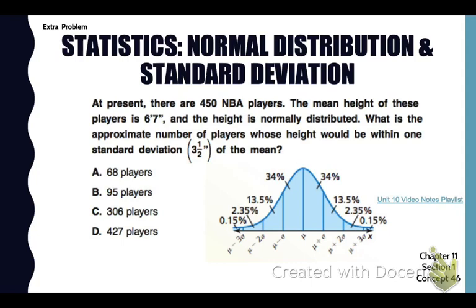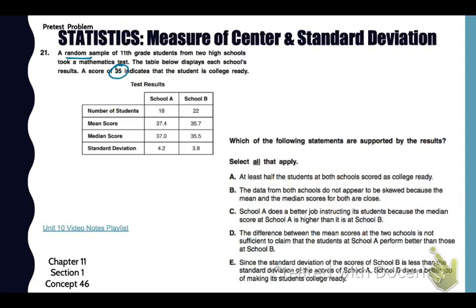Here's an extra problem in your notes packet. At present, there are 450 NBA players. The mean or average height of these players is 6'7". Wow. And the height is normally distributed. What is the approximate number of players whose height would be within one standard deviation? So that means that middle mark is 6'7", and 3½ inches in one direction, and 3½ inches in the other. So that would be a total of 68%. Since we are given the number of players, we can simply find 68% of that total, which would be 306 players. Those people are tall.